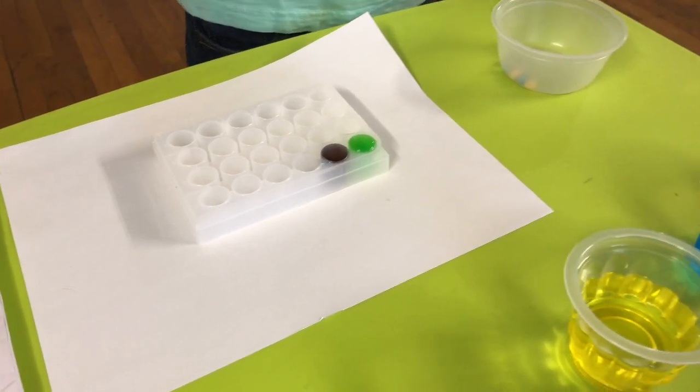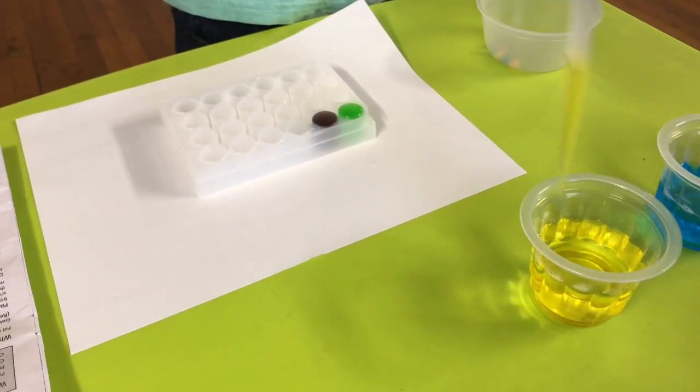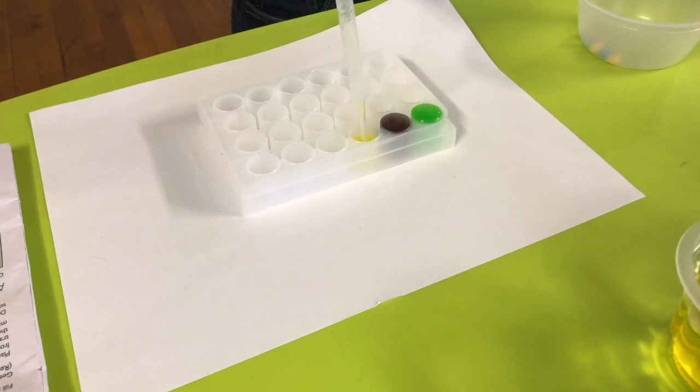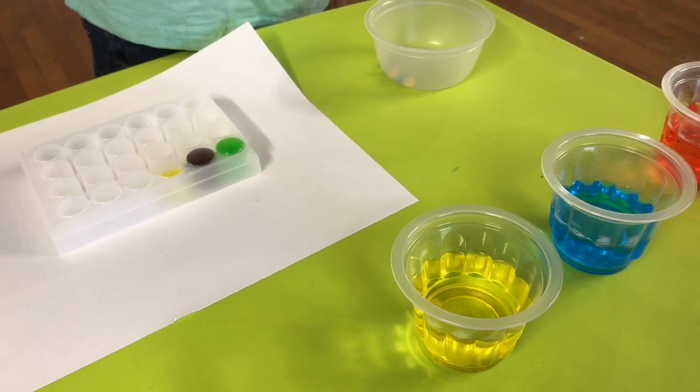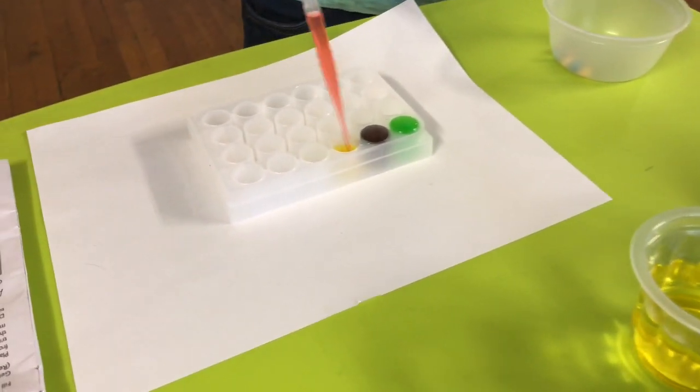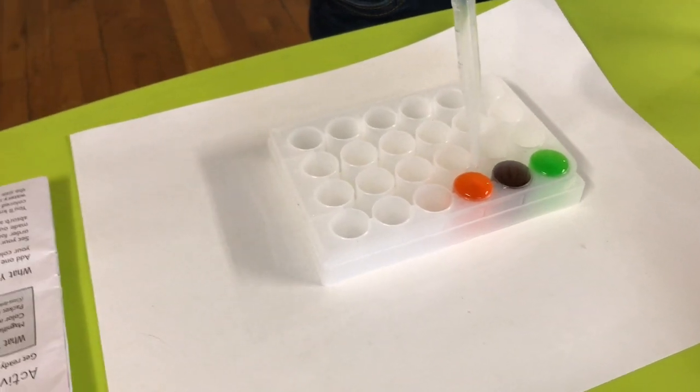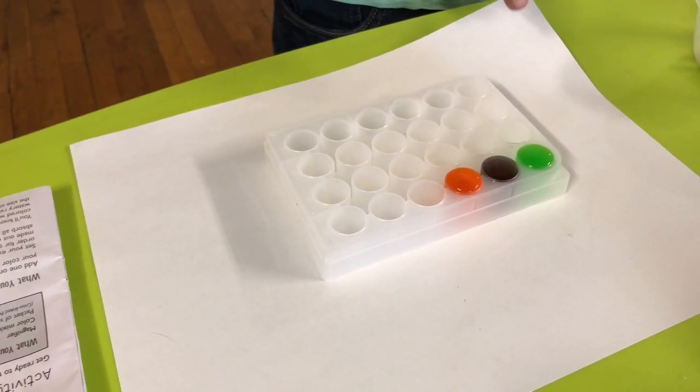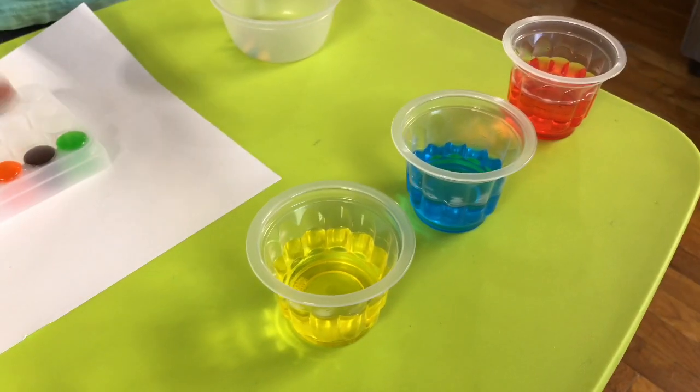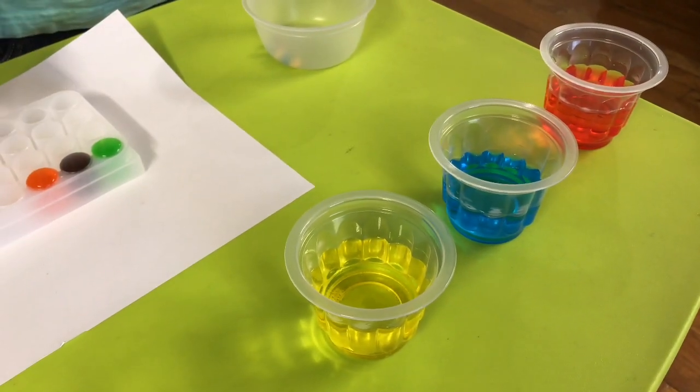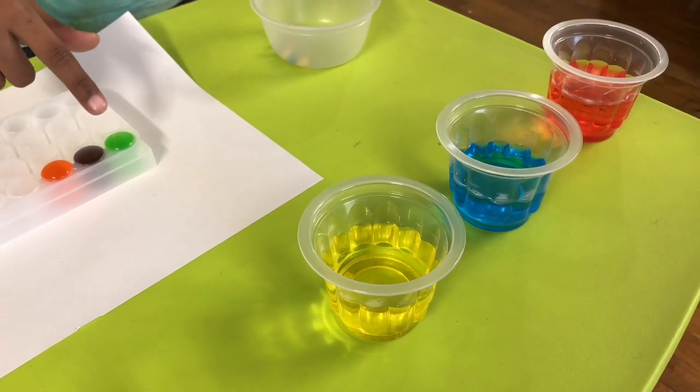Next we're going to do yellow with red. We have orange! So see, we turned all three of these primary colors to secondary colors, which are purple, orange, and green. Isn't it amazing?